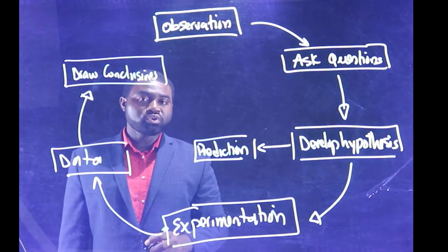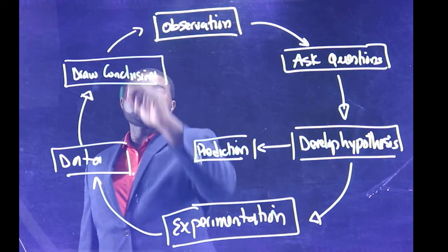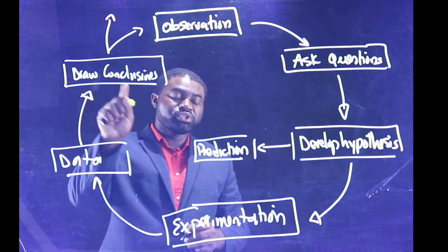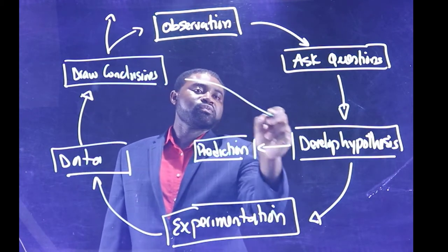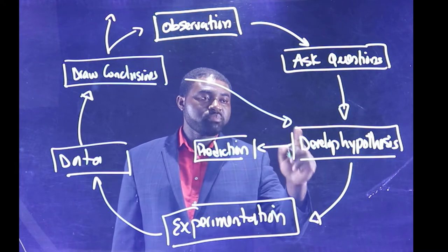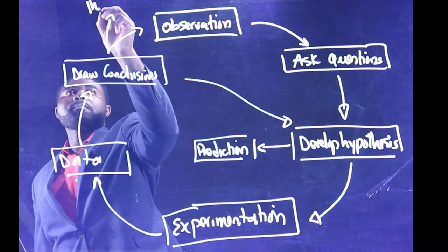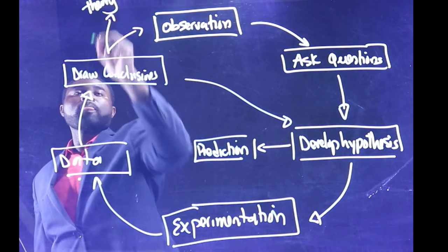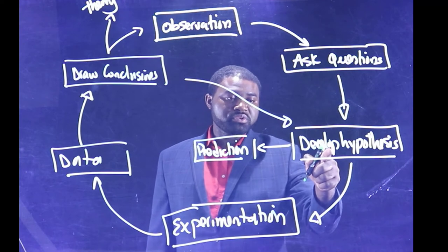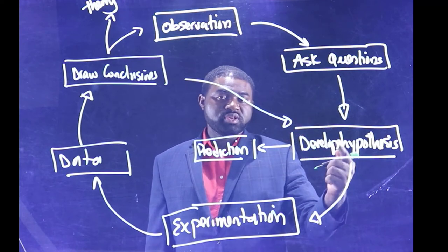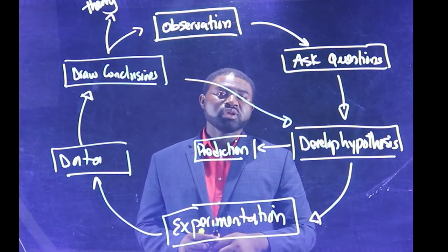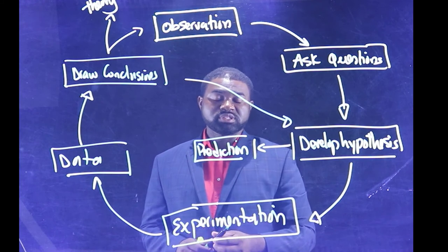If we draw conclusions, there are two things. If our conclusions confirm our prediction or our hypothesis, then our hypothesis becomes a theory. Otherwise, we will have to revisit our hypothesis, reframe our hypothesis, and start all over again. So this represents, in short, a schematic representation of the scientific process.